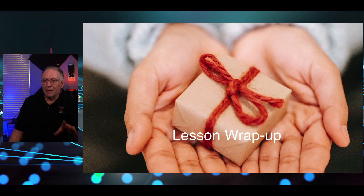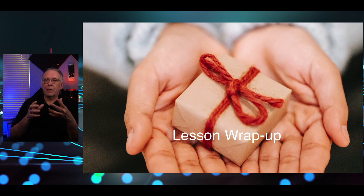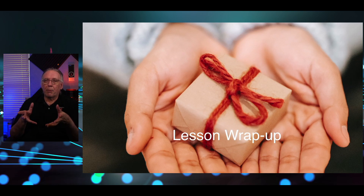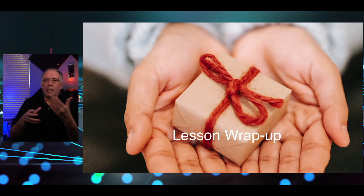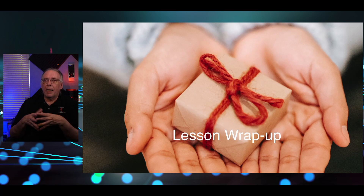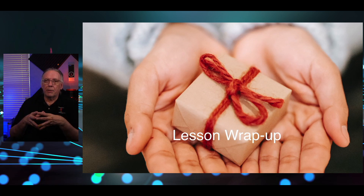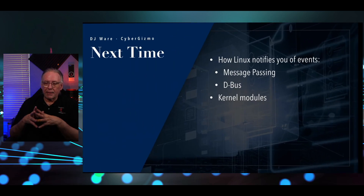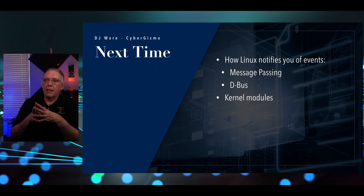Let's wrap things up. We talked about PCI and some of the commands you can use to list how it gets the information displayed to you. We talked about lsusb, how to determine the speed it's operating at, its requirement for a hub, and a little bit about the device classes and how those are used and managed. Next time, we're going to look at message passing and D-Bus, and if we have time, kernel modules in a bit more depth.